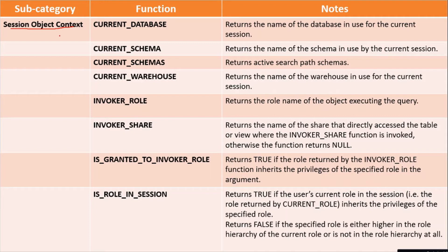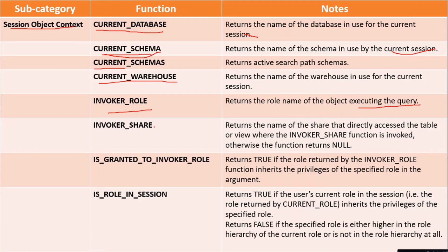The third subcategory is the session object context. From this category we have functions like current_database, which returns the name of the database in use for the current session; if you don't use any database, it returns null. current_schema returns the name of the schema in use by the current session; if you don't specify any schema name, it returns null. current_schemas returns the search path schemas. current_warehouse returns the name of the warehouse in use for the current session. invoker_role returns the role name of the object executing the query. invoker_share returns the name of the share that directly accesses a table or view where the invoker_share function is invoked; otherwise, the function returns null.